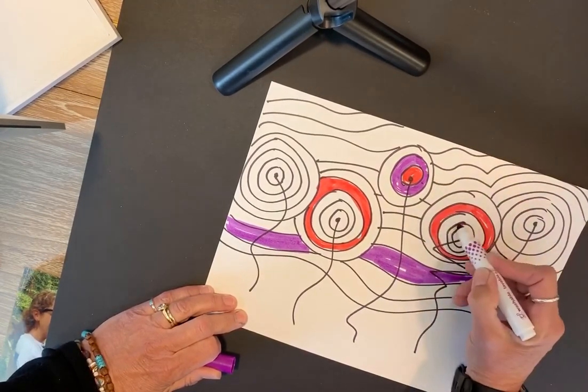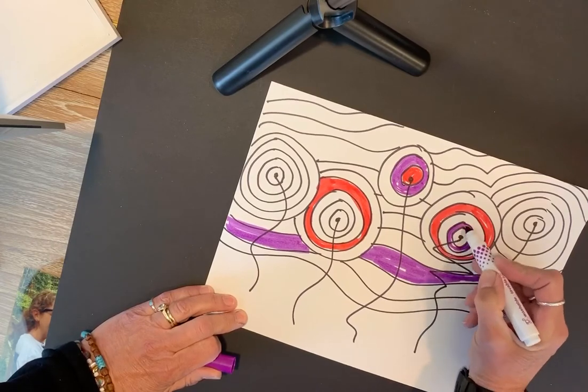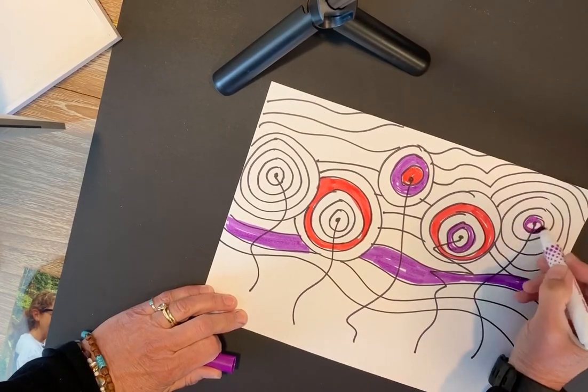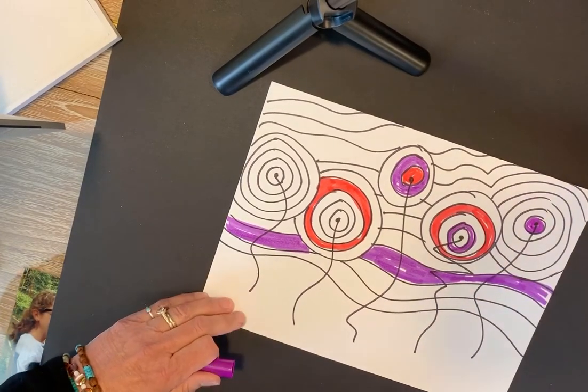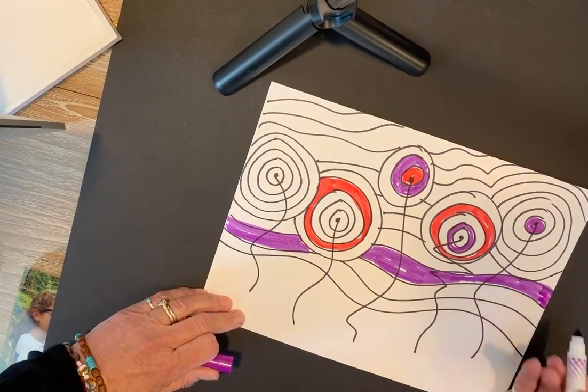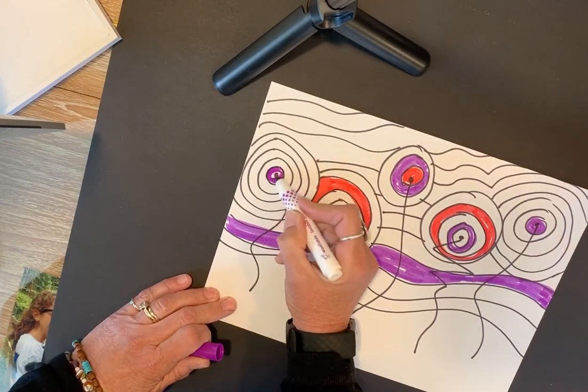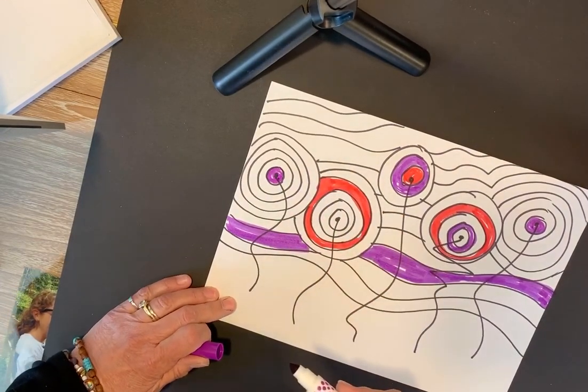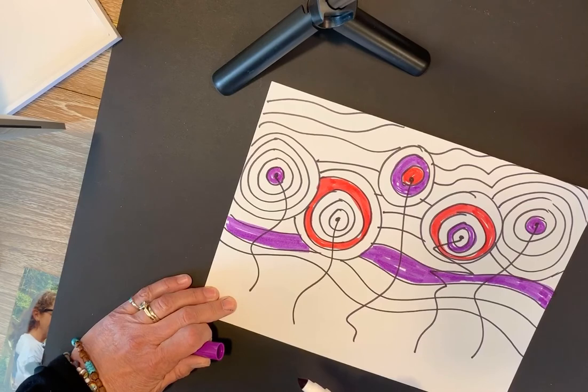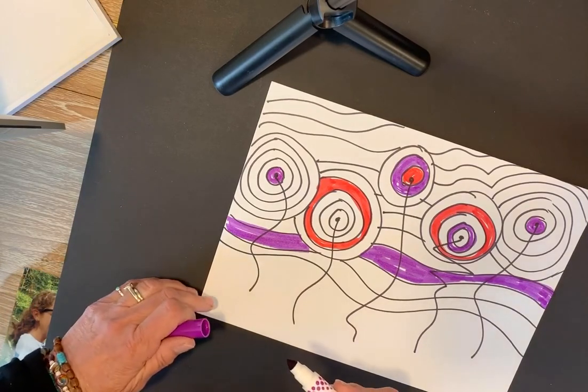So keep coloring that in. And anybody that finishes up your painting, I'd love to see it. If you can get someone to take a picture, you can send it to me on Dojo or email it to me. E-mead, E-M-E-A-D, period, at villasd.org.